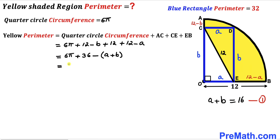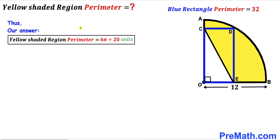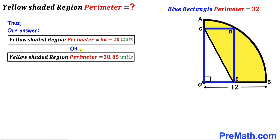We have 6π plus (12 minus b) plus 12 plus (12 minus a). Adding the constants: 12 plus 12 plus 12 gives 36, so we have 6π plus 36 minus a minus b. Factoring, that's 6π plus 36 minus (a plus b). From Equation 1, a plus b equals 16, so substituting gives 6π plus 36 minus 16, which equals 6π plus 20, approximately 38.85 units. That's our final answer.